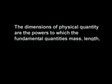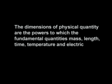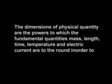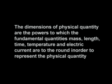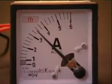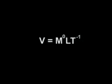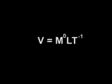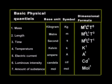The dimensions of a physical quantity are the powers to which the fundamental quantities — mass, length, time, temperature, and electric current — are raised to represent that physical quantity. Temperature and electric current are represented by K and I (or A). The expression indicating the units of a physical quantity in terms of fundamental units is called a dimensional equation. For example, the dimensional equation of velocity is: v = M⁰·L·T⁻¹.